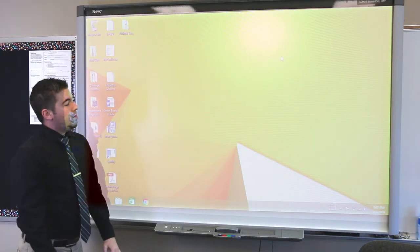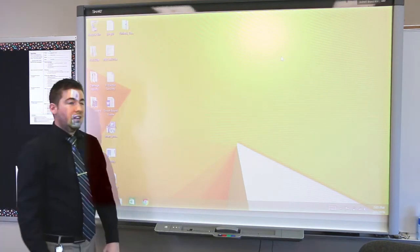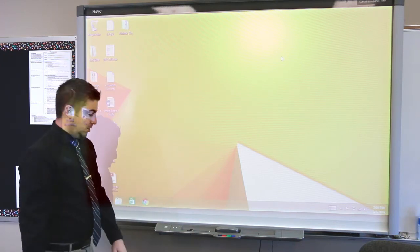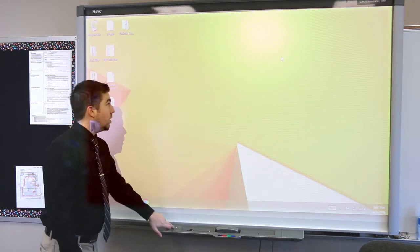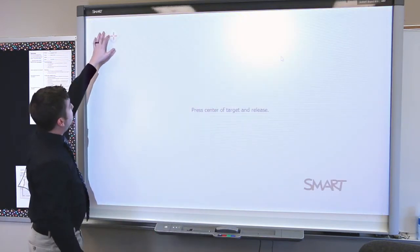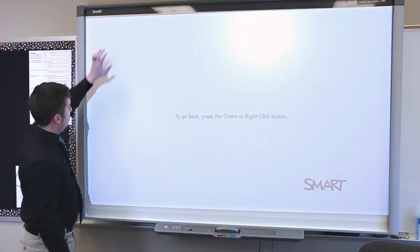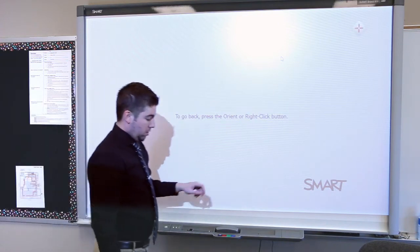One of the most common things you'll run into with the 600 and 800 series boards is miscalibration. For us to access the calibration feature, we can hit the calibration button on the pin tray, pulling up this window here, and we follow the prompts, pressing and releasing in the center of the target.